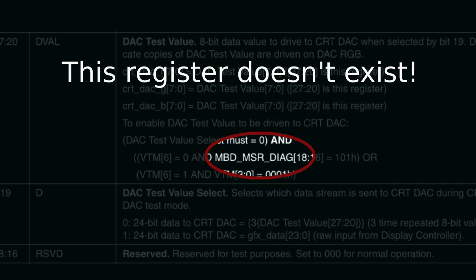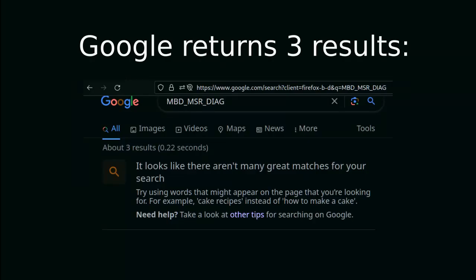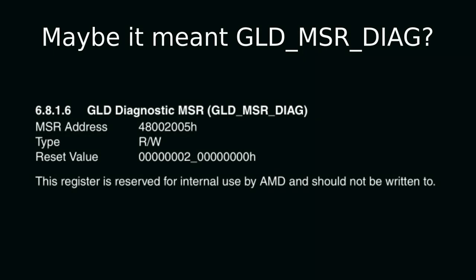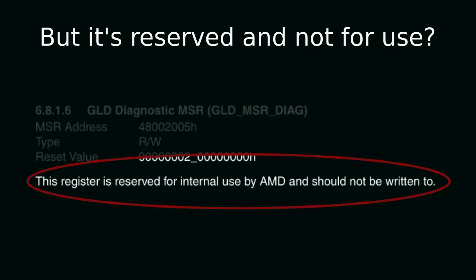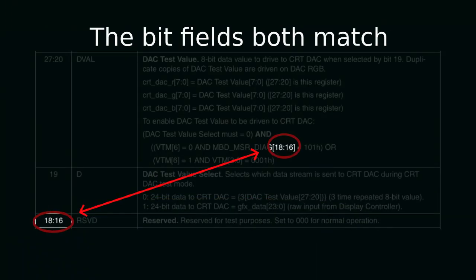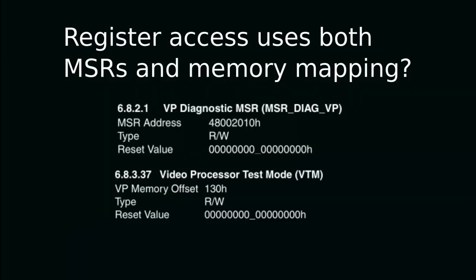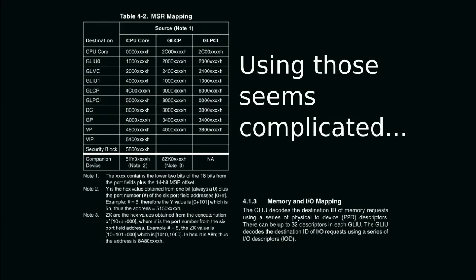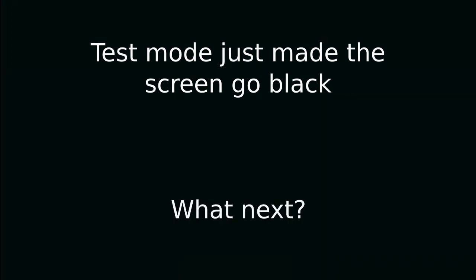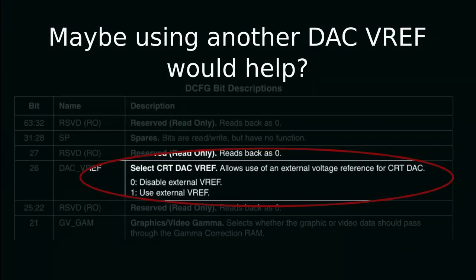First, the MBD MSR Diag register doesn't exist. I googled it and got three results — the top one is my website. It could be a typo for GLD MSR Diag, but that register is reserved and not for use. Maybe it's a typo for the reserved test field I saw earlier? The bits line up — both reference bits 18 to 16. Setting these registers uses both MSRs and memory mapping, and the documentation on how to use these is fairly confusing. So I gave up and just modified the Linux driver to set registers for me. And it just made the screen go black.